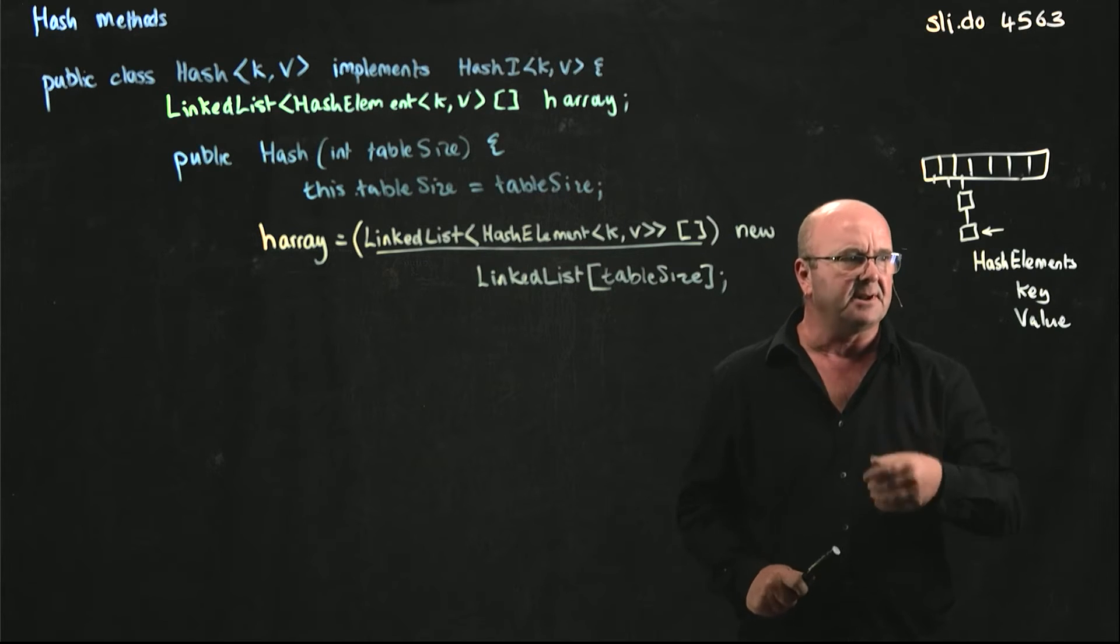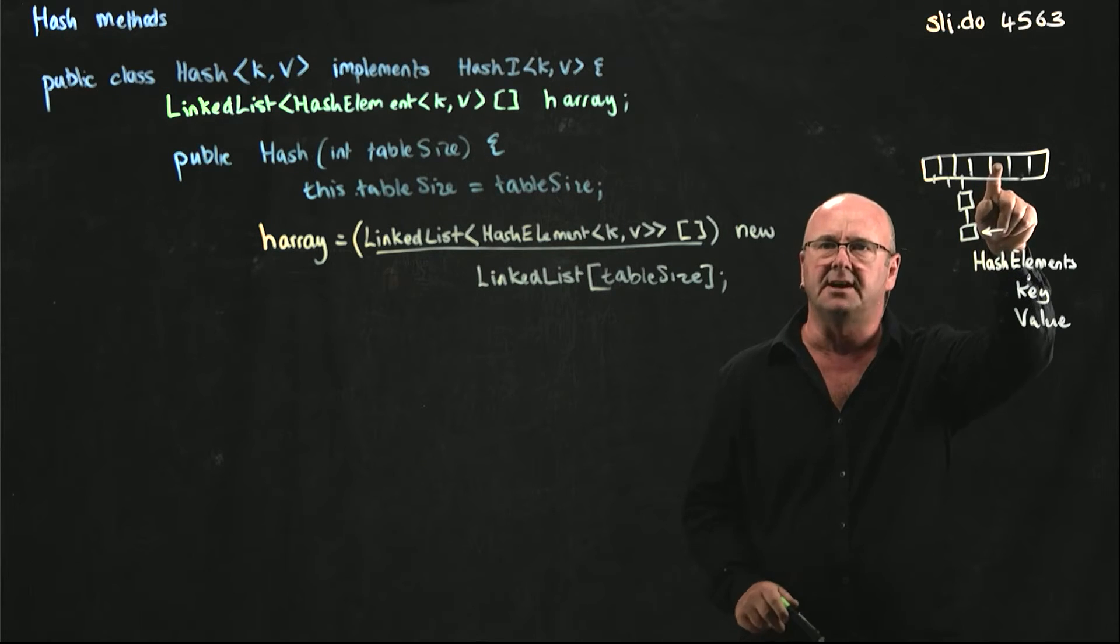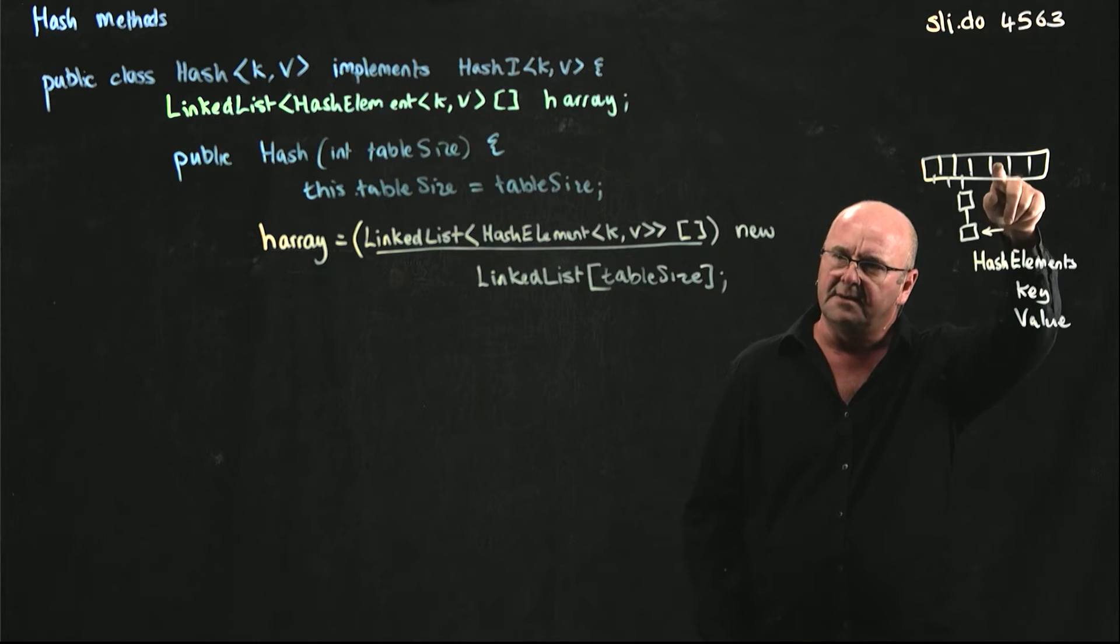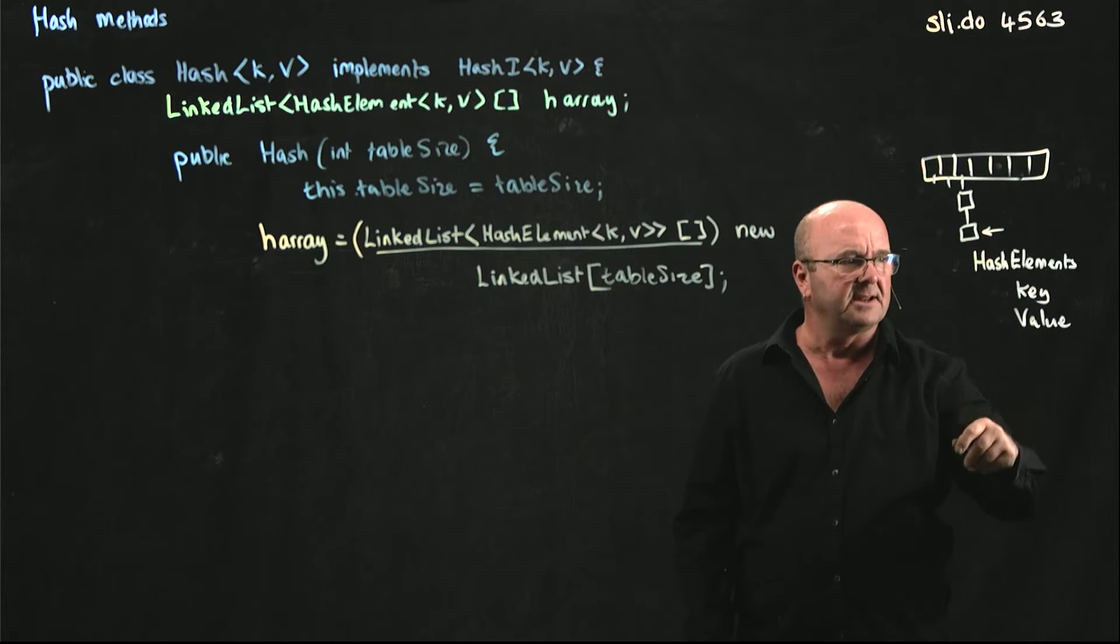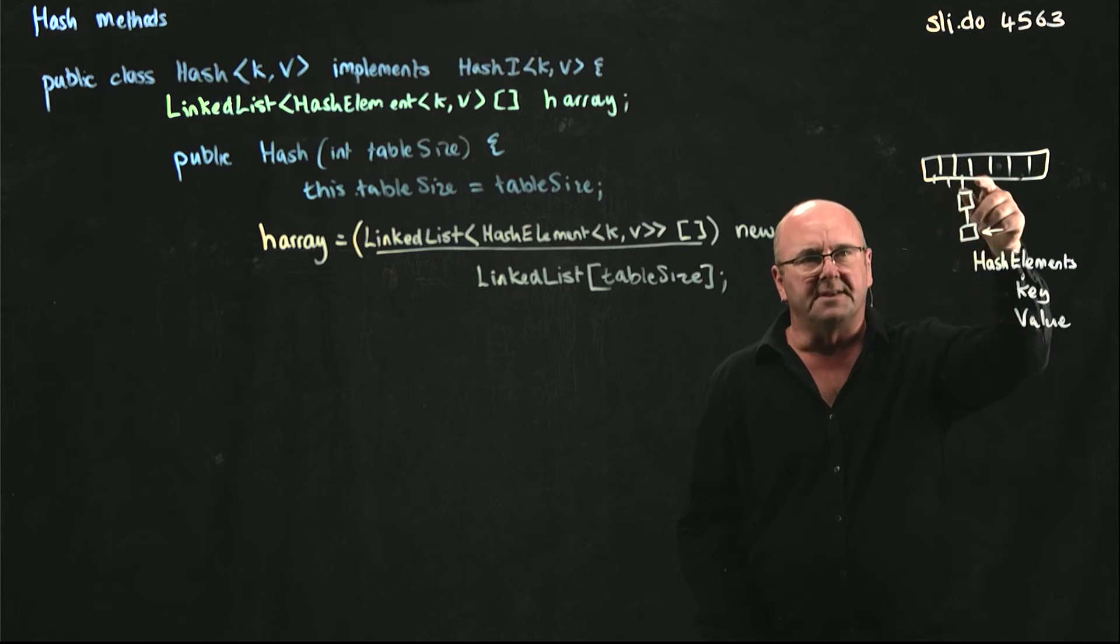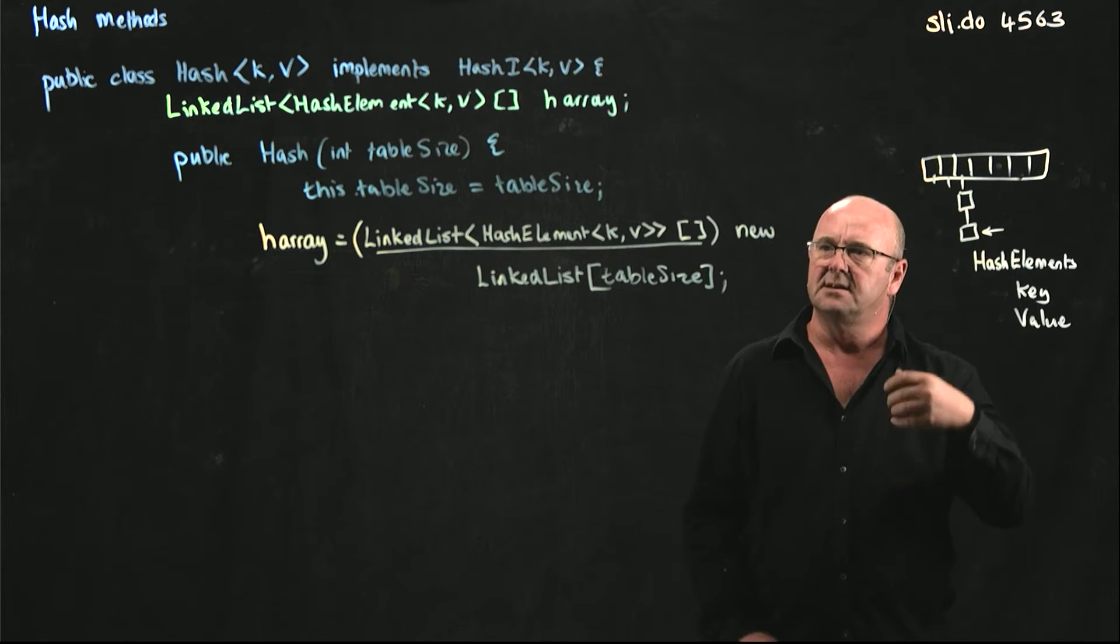So if we want to add something to our linked list, we have to go to that position in the array and say, is there a linked list here? If there is, go through the linked list until we add it. If there's not, create a new linked list and then add something.